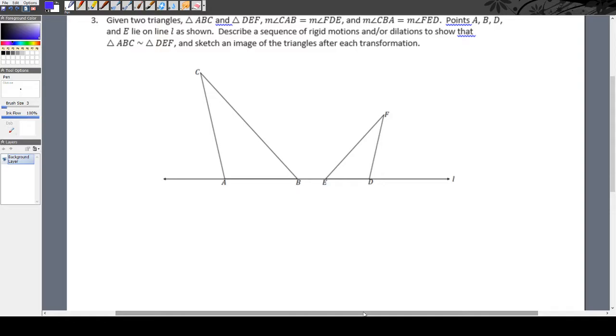given two triangles ABC and DEF, measure of angle CAB, so that's this angle right here, is congruent to the measure of angle FDE, this one right here, and the measure of CBA, this angle here, is equal to the measure of this angle here, FED.